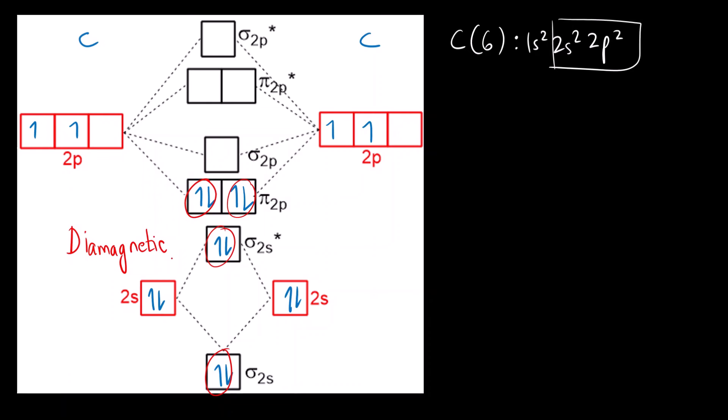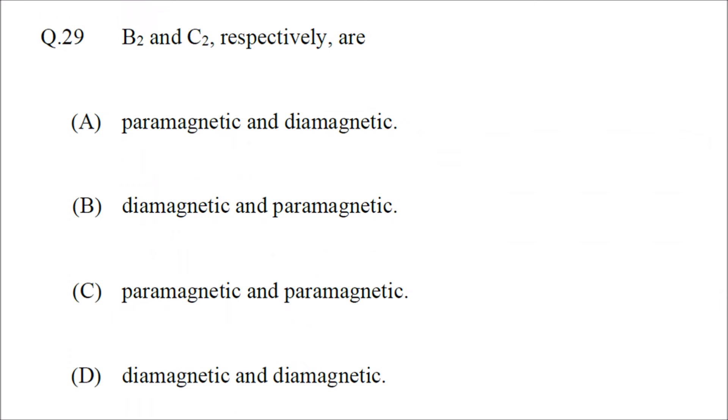Since there are no unpaired electrons in C2, it is diamagnetic. So the final answer is: B2 is paramagnetic and C2 is diamagnetic. The correct answer is option A. I hope you have understood the solution. Thank you.